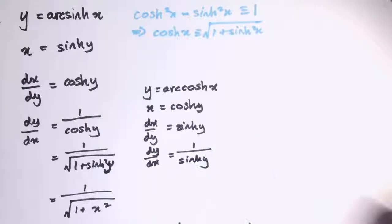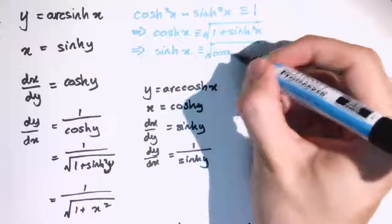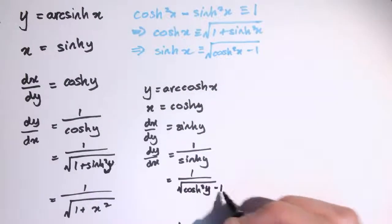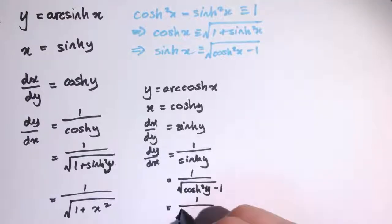Another variant of the identity is that sine x is equal to the square root of cosh squared x minus 1. So we replace sine y with the square root of cosh squared y minus 1. Then we remember that cosh y was x, so this is 1 divided by the square root of x squared minus 1.